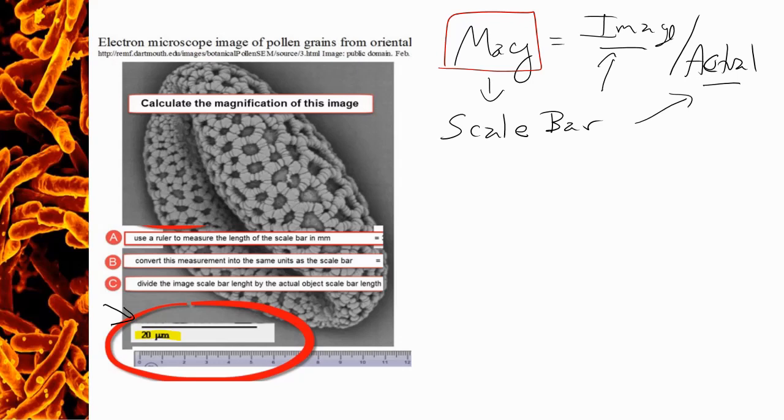So now we can start filling in the equation. We now know that magnification is going to equal an image size over the actual size of that scale bar, which is 20 micrometers.